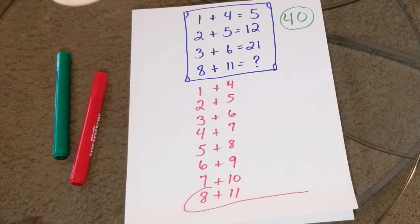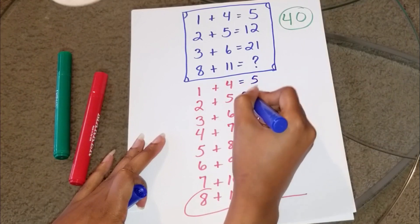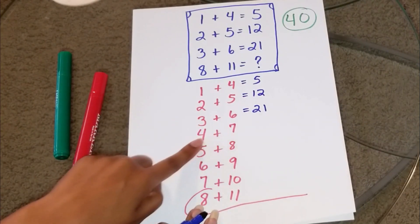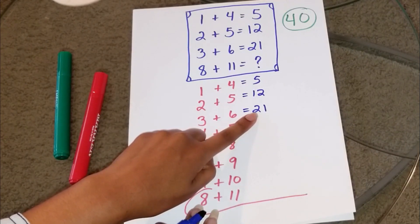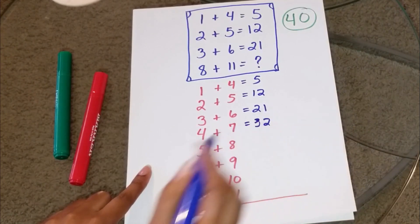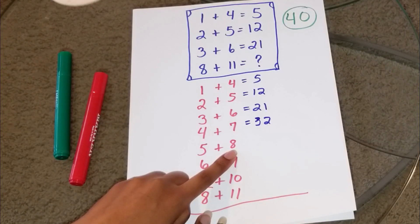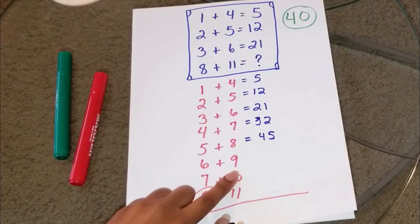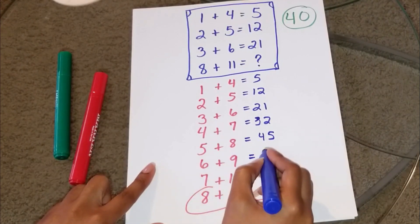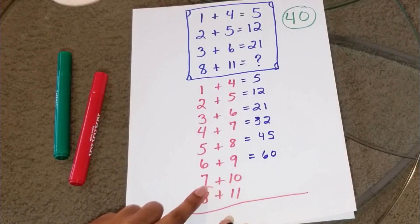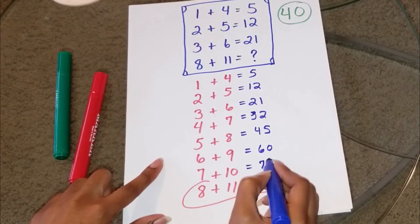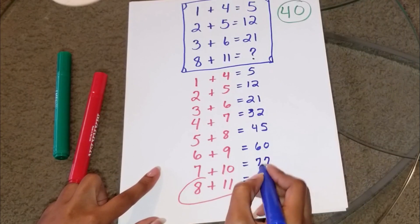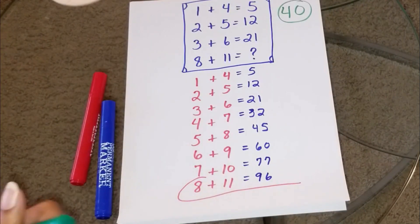If we go that route, then what's going to happen is we have the exact same answers because we keep the same pattern, but in this case, 4 plus 7 is 11, and 11 plus 21 is what? 32. 5 plus 8 is 13, and 13 plus 32 is 45. 6 plus 9 is 15, and 15 plus 45 is 60. 7 plus 10 is 17, and 17 plus 60 is 77. 8 plus 11 is 19, and 19 plus 77 is 96. So, then we have our second contender, 96.